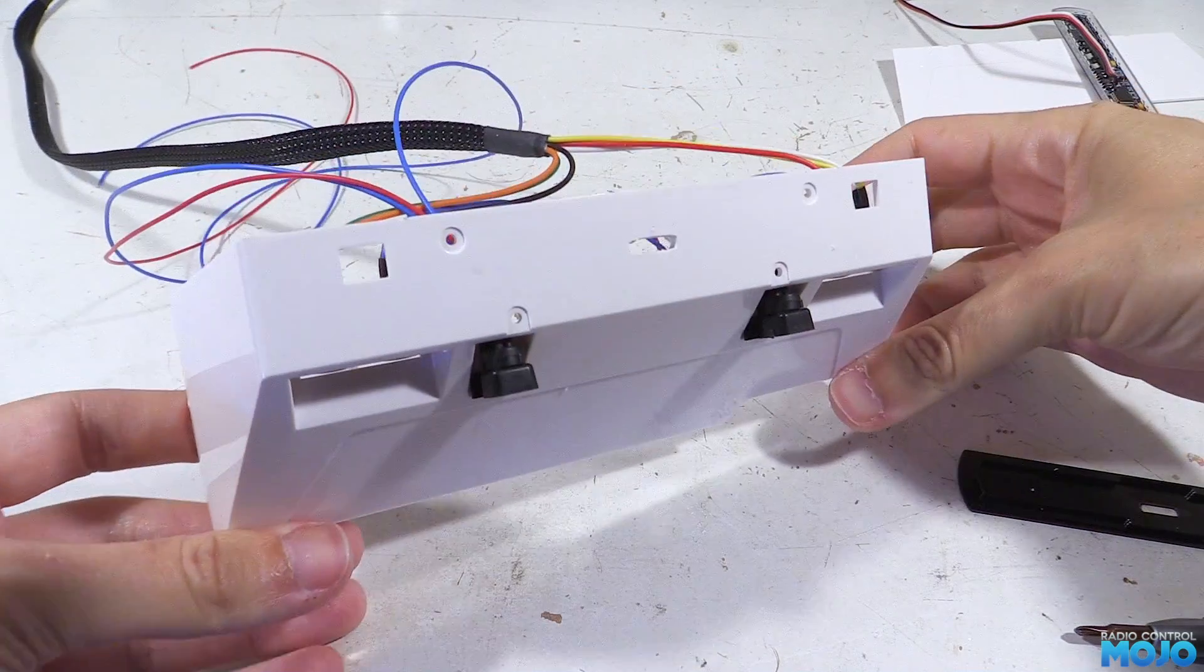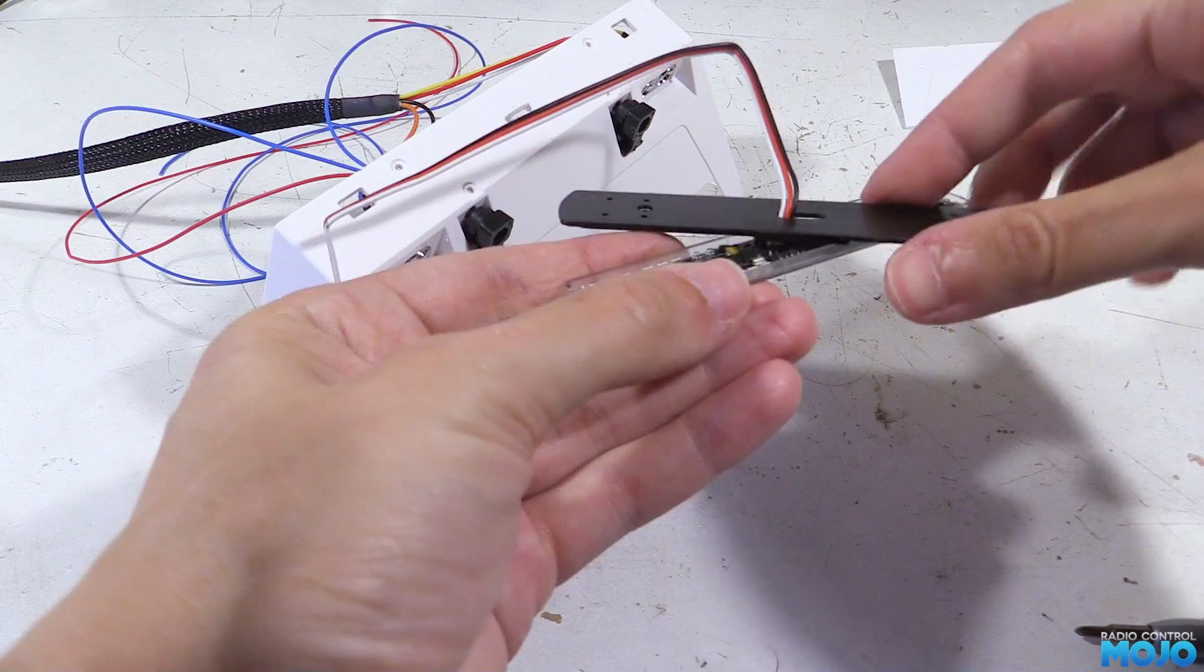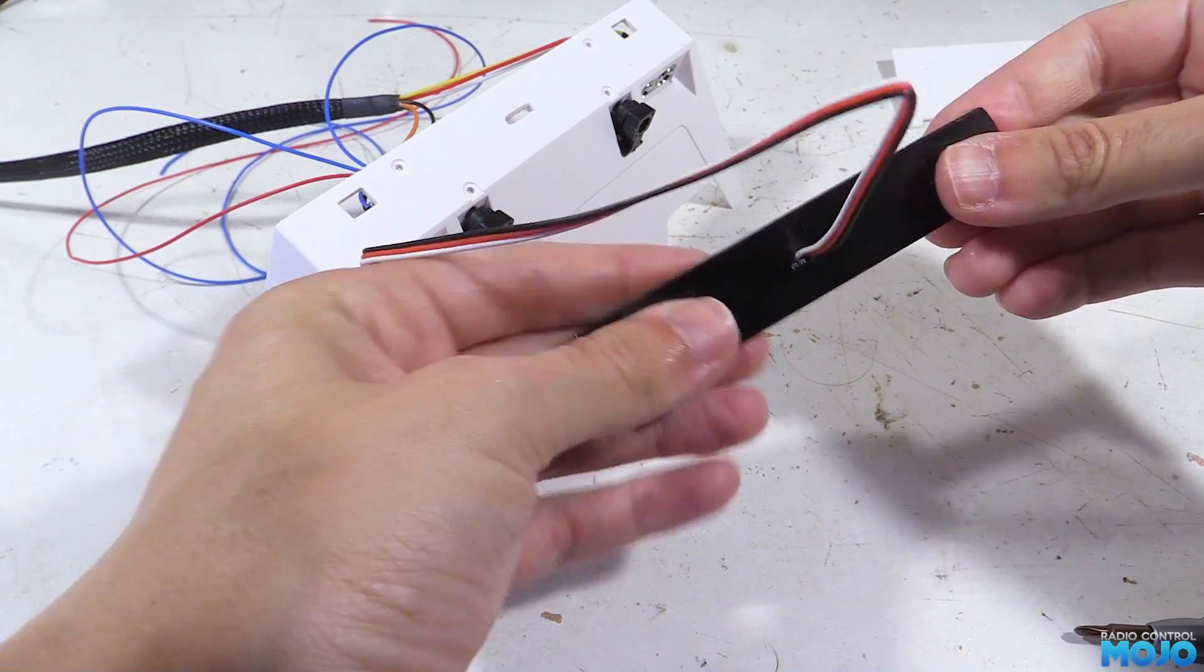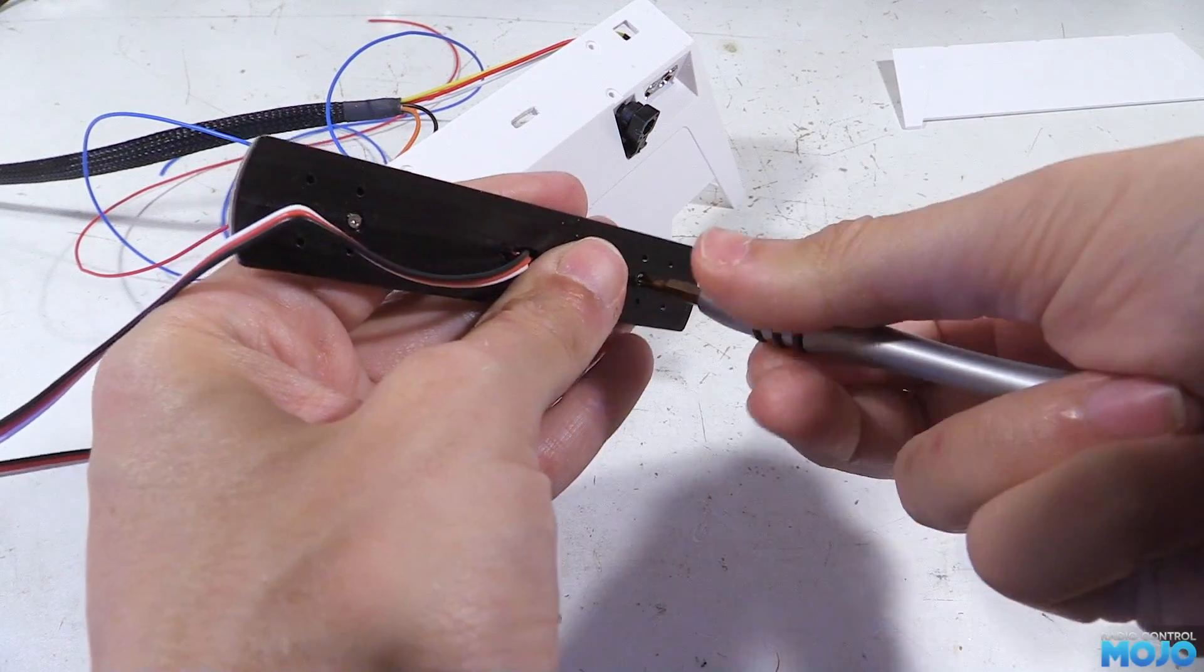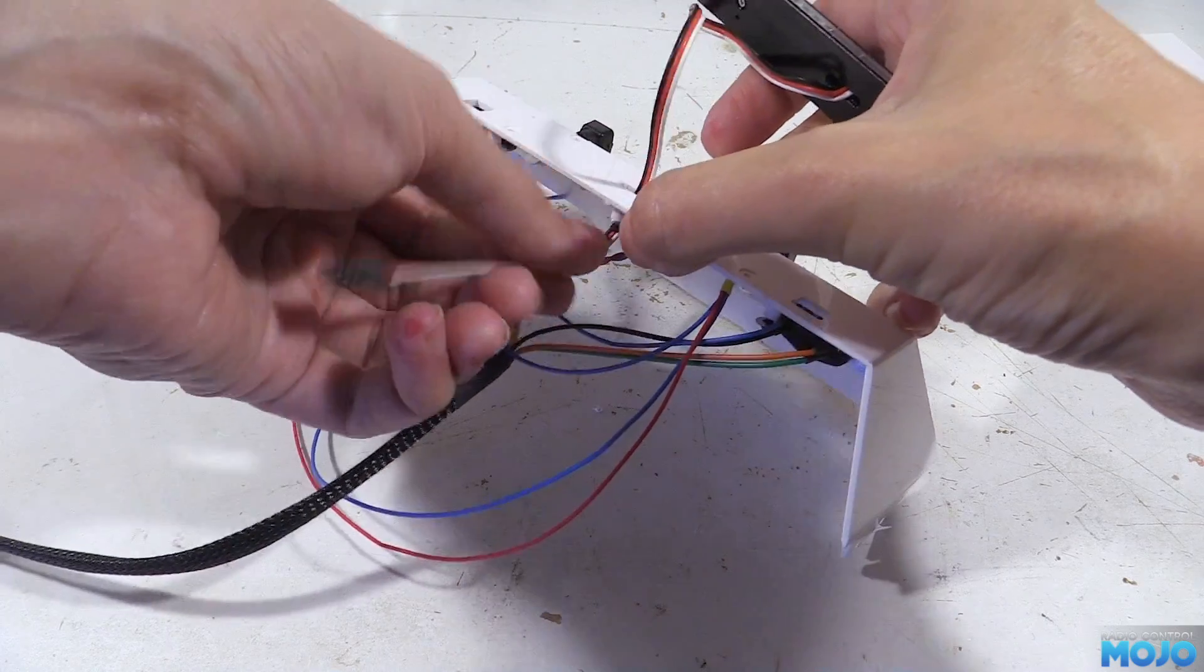Now we can centre it up on the top of the box, it doesn't matter if it's a bit off one way or another, and we can draw around the hole for the wiring. Then a quick Dremel and we have a hole just big enough to pass the servo connector through.